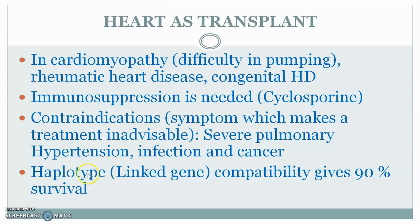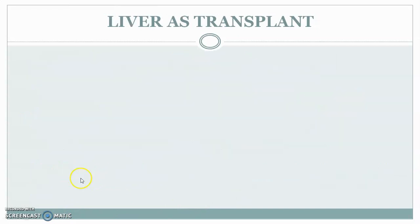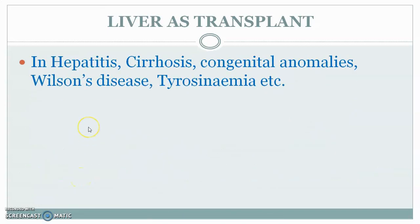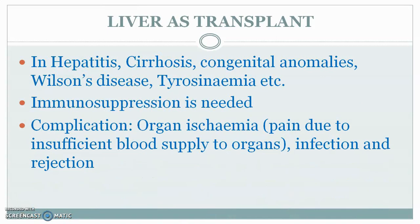A probability of 90 percent survival of the graft is associated with haplotype matching — a haplotype is a group of linked genes. Liver transplant is usually done in cases of hepatitis, cirrhosis, congenital anomalies, Wilson's disease, and tyrosinemia; immunosuppression is needed. Complications associated with liver transplantation include organ ischemia — meaning pain due to insufficient blood supply — infection, and rejection.